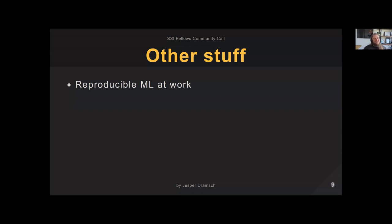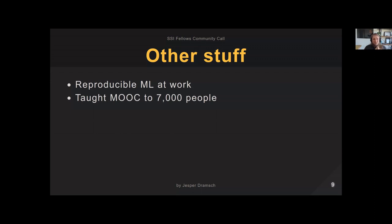I also worked on reproducible ML at work — we're using Weights & Biases now and doing very strict evaluation, which is easier at my job because we're predicting the weather, so strong evaluation is required anyway. Then I was involved in a MOOC that taught machine learning in weather and climate to 7,000 people who signed up, with about 1,500 finishing the course — which is still an amazing turnout. I got to sneak in my evaluation section there as well, warning people that without it they have no idea if their ML is actually doing what it's supposed to.